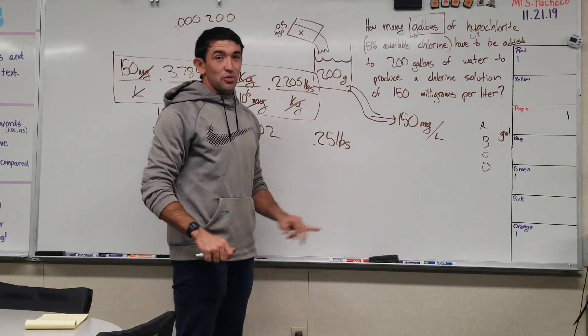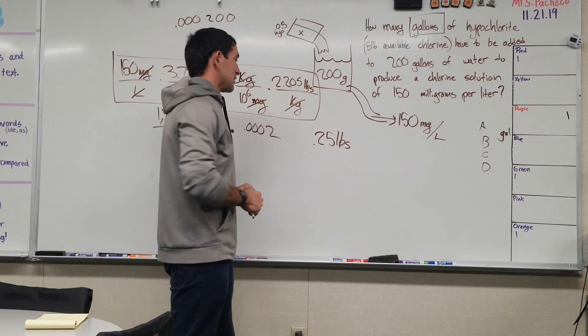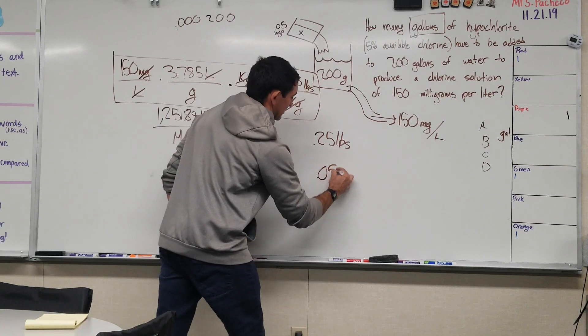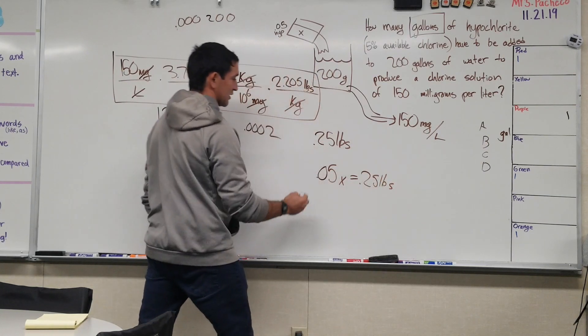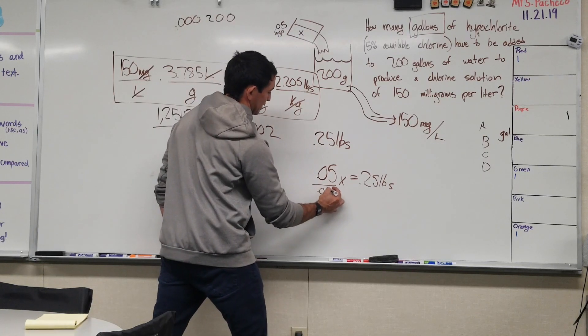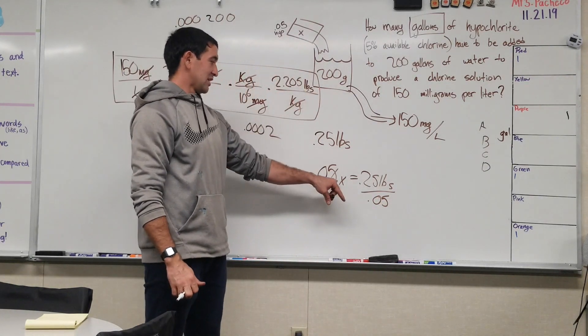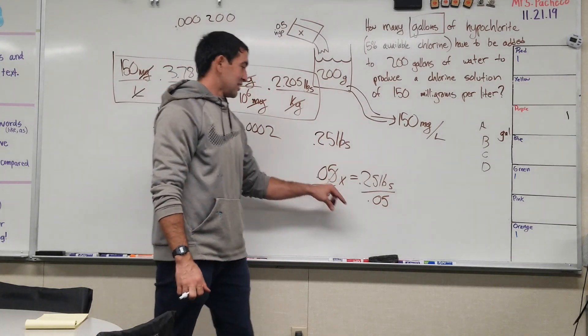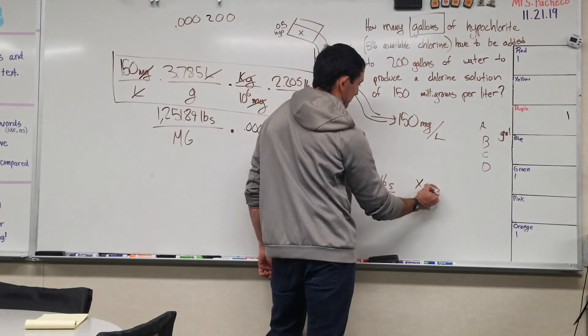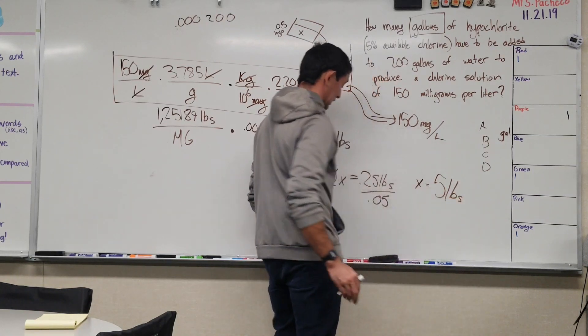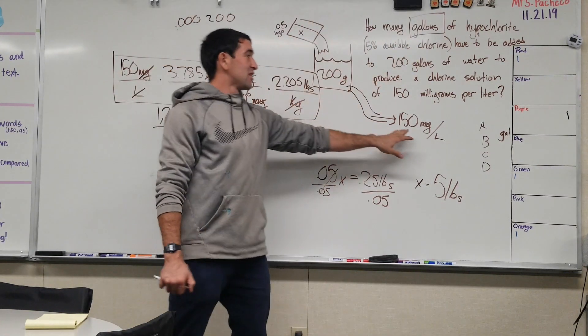So we know we need 0.25 pounds, but our solution is only 5% chlorine. So 5% of what x is 0.25 pounds? So let's get that 0.05 over there and figure this out. 0.25 by 0.05. So I don't know if you guys remember that from school, but when you have an x on one side and you need to solve for x, you throw it under to the other side and that's solved. So 0.25 over 0.05, x equals 5. 5 pounds. Okay, so we know our answer in pounds. It takes 5 pounds of our hypochlorite solution to give us 150 milligrams per liter.